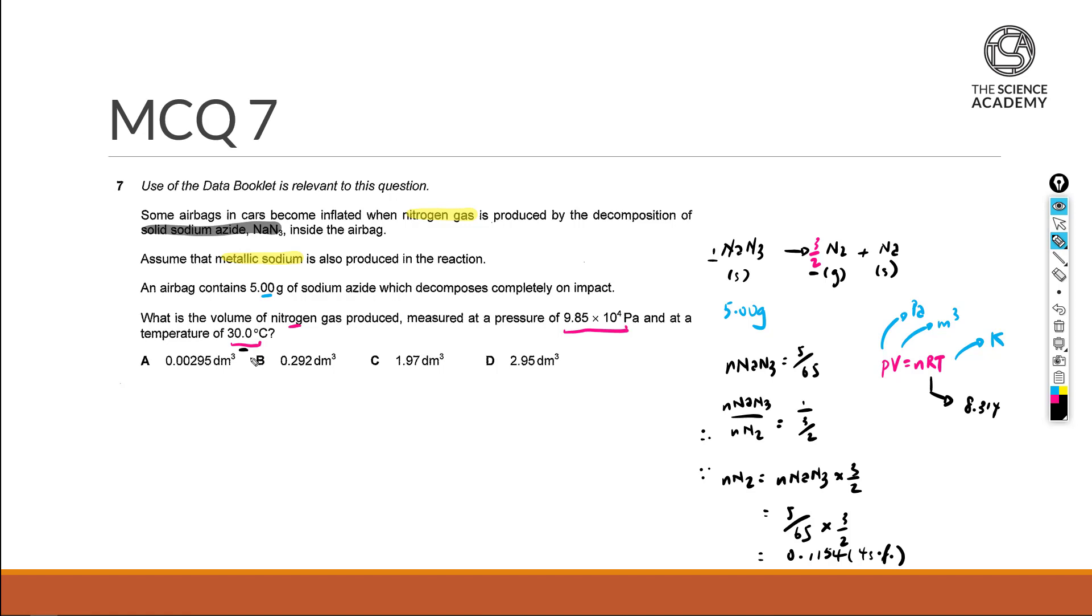To show our volume, just to rearrange the equation, volume will be equal to nRT divided by pressure. And here itself is a number of moles which is inherited at 0.1154. Do use the full value.